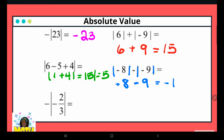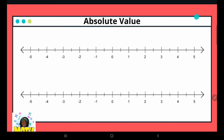Now we have fractions — the concept is still the same. The absolute value of negative two-thirds is two-thirds, and the negative sign on the outside we simply bring over.